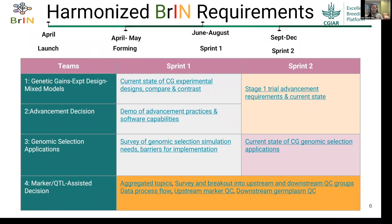These are the four teams and their harmonized requirements. Some are ready and some need more time for IT implementation. The four teams are: experimental design, trial advancement, genomic selection, and molecular breeding. In the first sprint, experimental design and advancement ran separately, and in the second sprint they converged together. Now we have the aggregated stage-one trial advancement requirements ready.